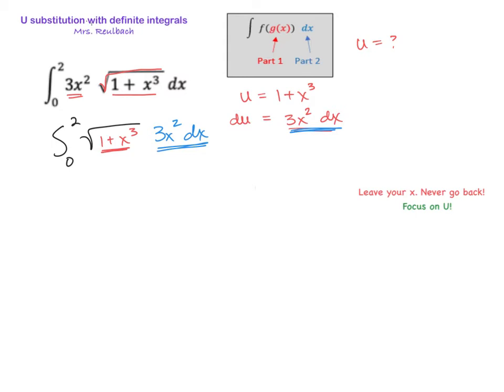And then you are going to do some substitutions. So the u goes inside. 1 plus 3x is u, and we're going to rewrite this to the 1 half. And then all of this just becomes our du.